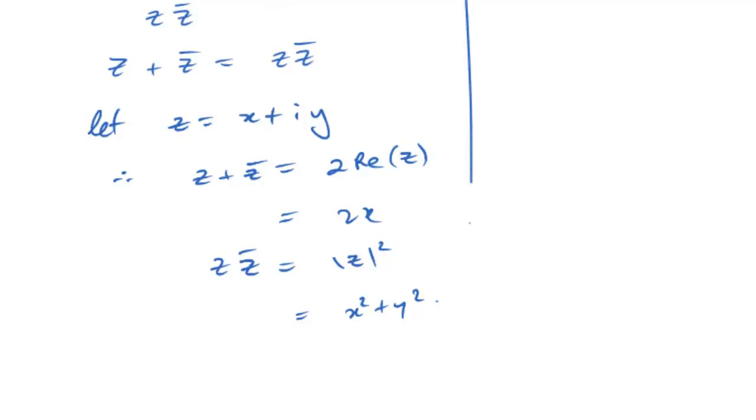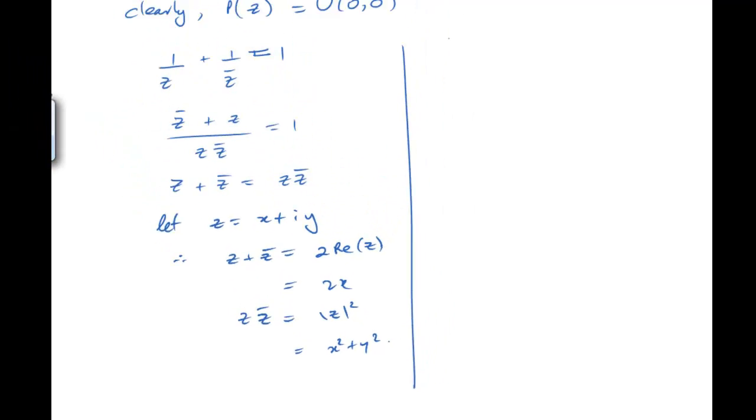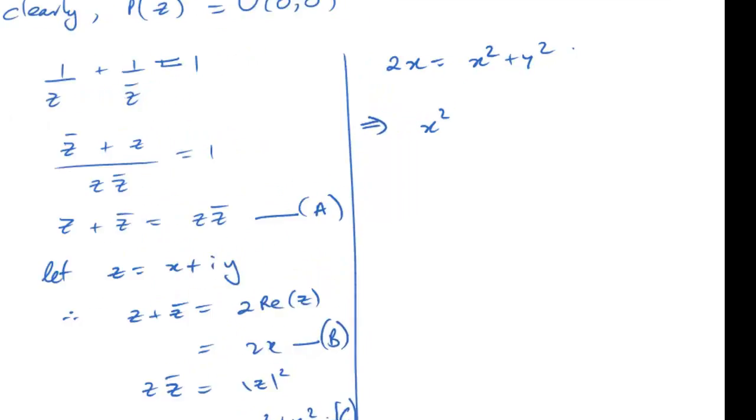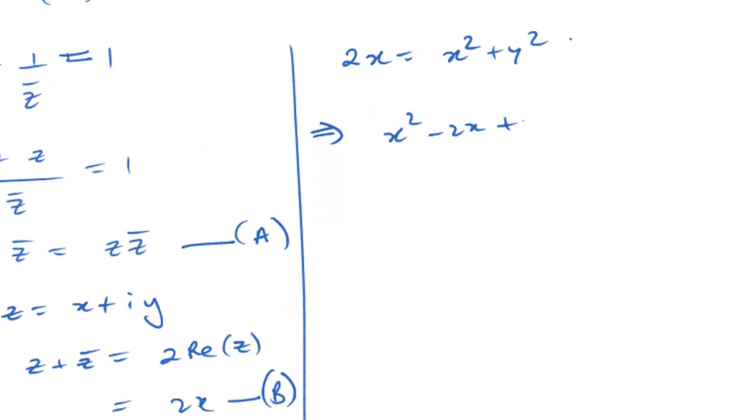So, putting all that together, we get, if you look at this equation here, sorry, this final equation, call this equation A. If you put B and you put C into A, you will get 2x equal to x² + y², which clearly leads to x² - 2x + y² equal to 0.